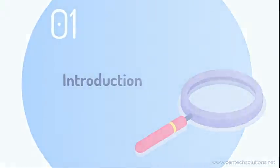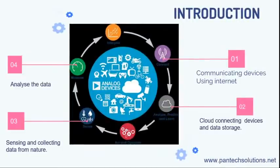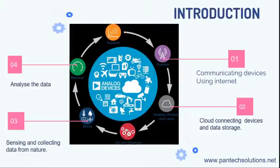In IoT, first you need a communicating device using the internet. If you take IoT, we have hardware, sensors, and cloud. If data is collected by sensors, we need to transfer that data from one place to another — through the cloud. For that purpose, we need some communicating device, like antennas, to transfer data from one place to another.